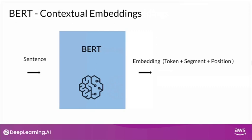Contrast that to BERT, where the input is not the word but the sentence itself. The output once again is an embedding, but this time the embedding is based on three individual components: token, segment, and position. How exactly to do this transformation from a sentence into an embedding consisting of these three individual embeddings, you will see in the next video.